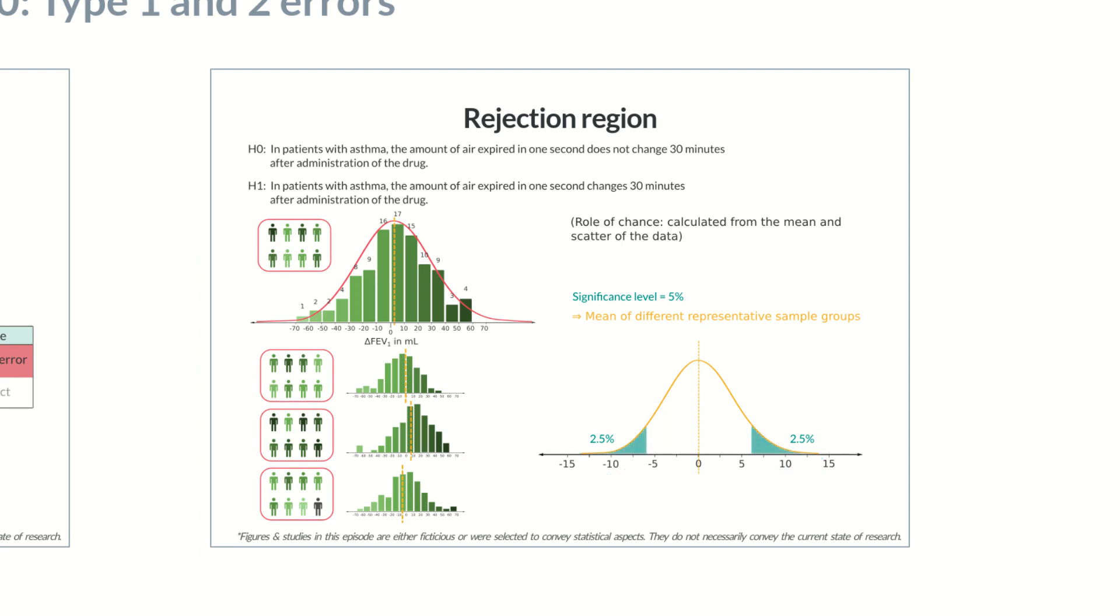Let's mark the error range here in blue. These shaded areas are known as the rejection region. If the test value falls in these regions, it's unlikely that the null hypothesis is true. Therefore, it's rejected.